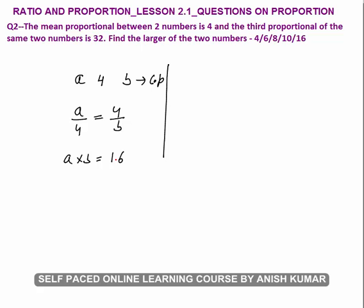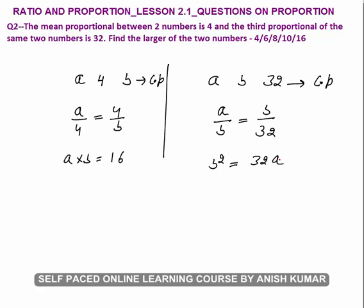The second part says the third proportional of the same two numbers a and b is 32. So we write the third proportional after the two numbers — these three will also be in continued proportion. So a by b equals b by 32, which gives b squared equals 32 times a. Now substituting a equals 16 divided by b, we get b squared equals 32 times 16 divided by b, so b cubed equals 32 times 16.